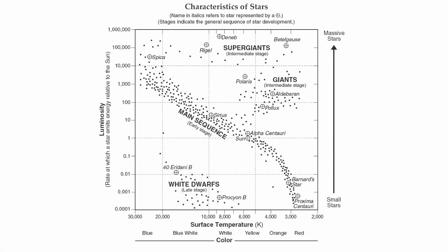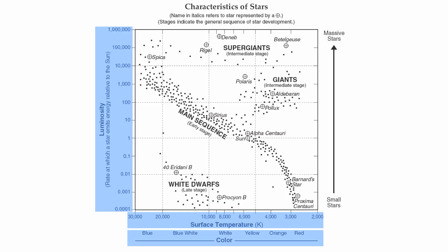This chart organizes our stars based on a couple different factors. One of the factors is luminosity — how bright a star is, or how much light a star gives off — and that's along our vertical axis. Our horizontal axis has two scales. Temperature in degrees Kelvin increases from right to left, so stars on the right-hand side tend to be very cool and stars on the left-hand side tend to be very hot. Each temperature corresponds with a color: red stars tend to be very cool, and blue stars tend to be very hot.